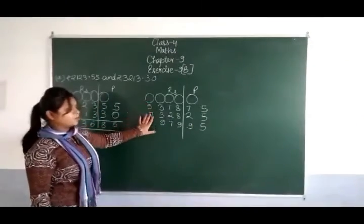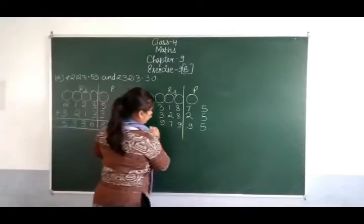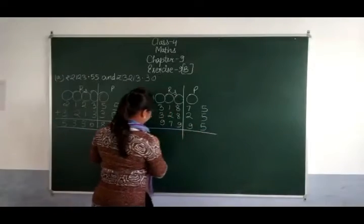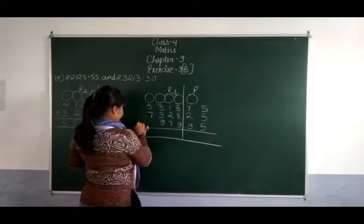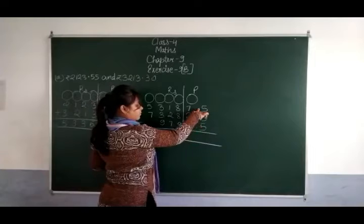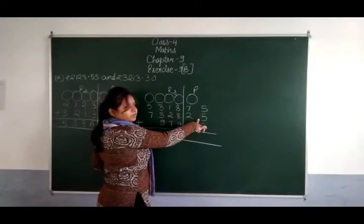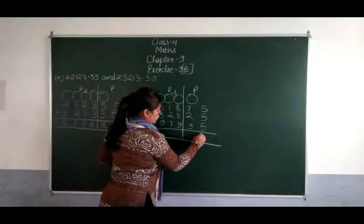We have arranged them in columns. Now what do we do? Add them. Plus sign. 5 plus 5 is 10. 10 plus 5 is 15.